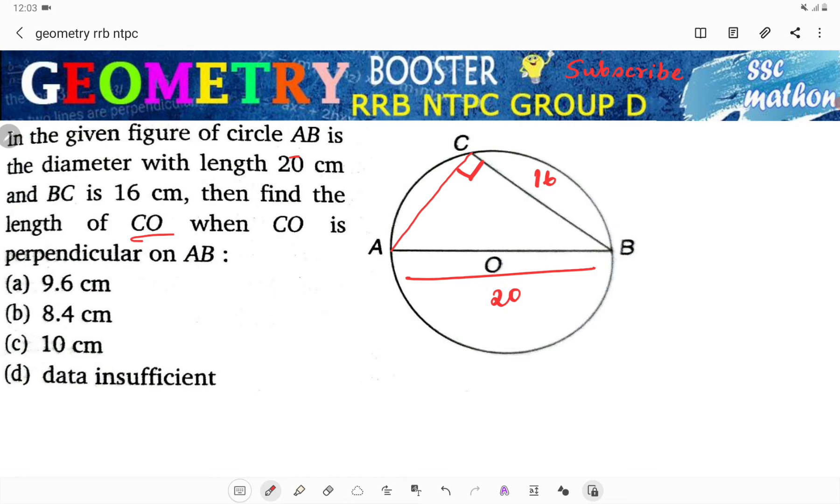If this is sixteen and this is twenty, then we can find AC. Using the 3-4-5 golden ratio numbers, we can determine AC equals 12. The geometry becomes much better.